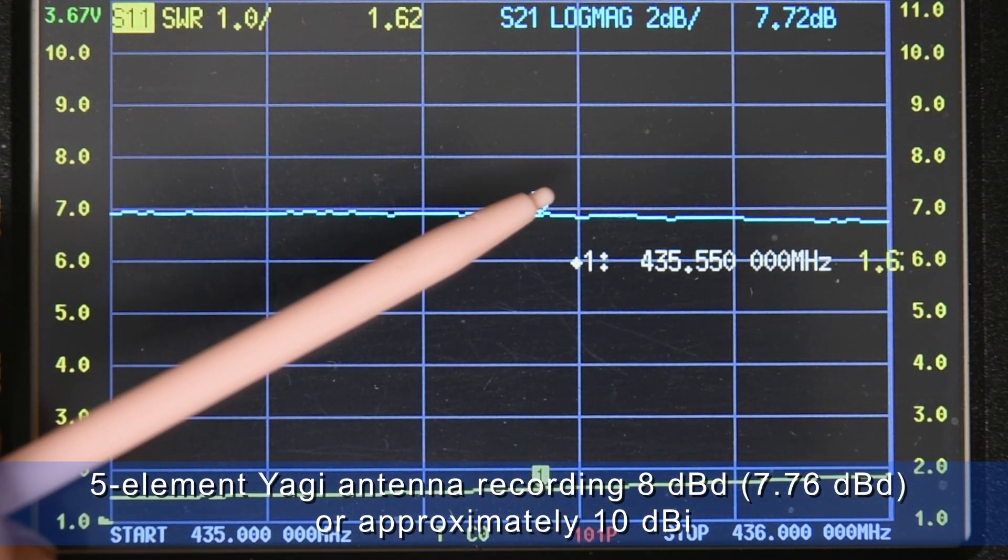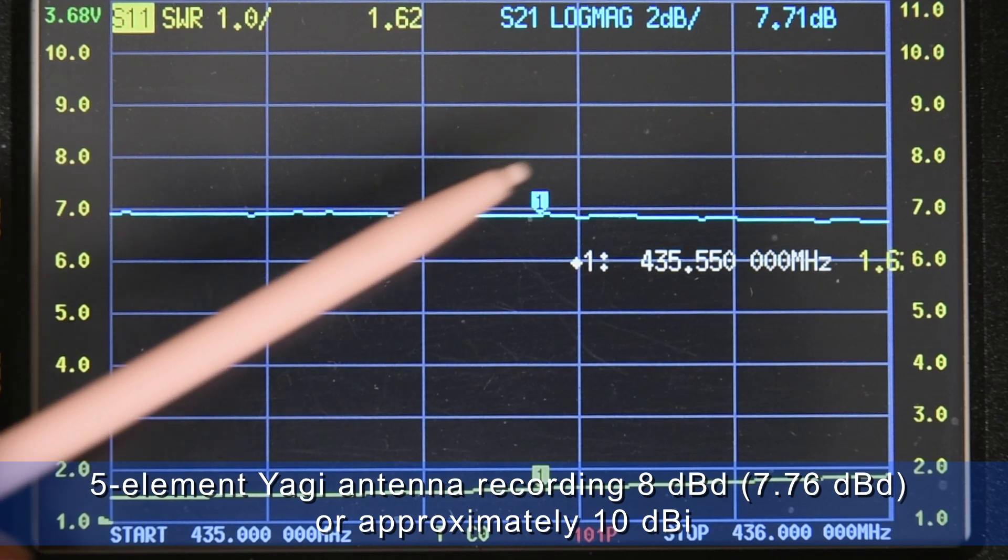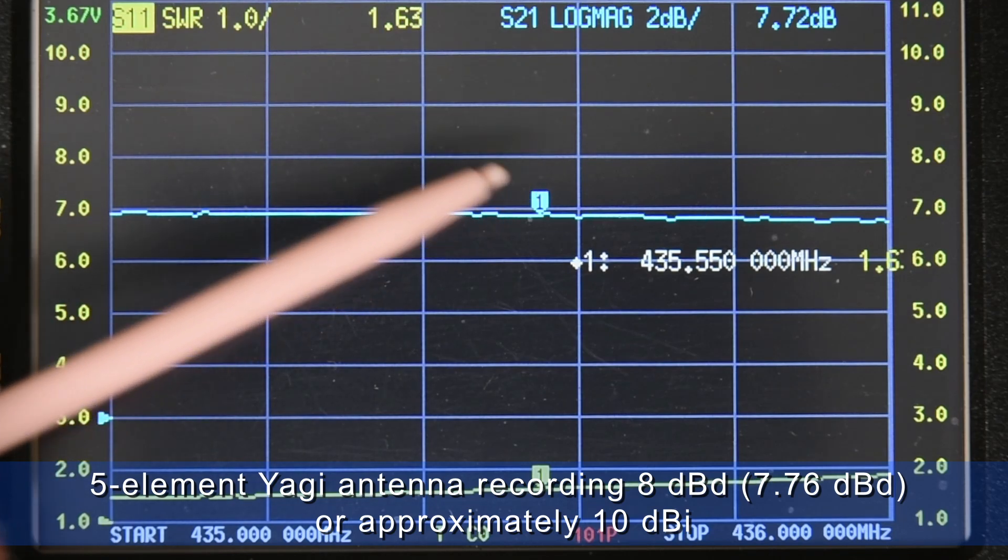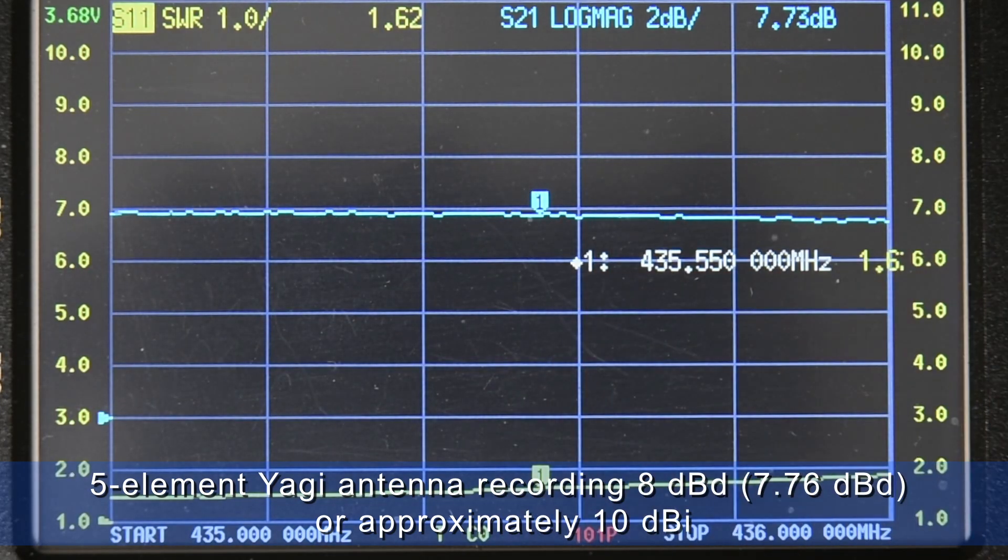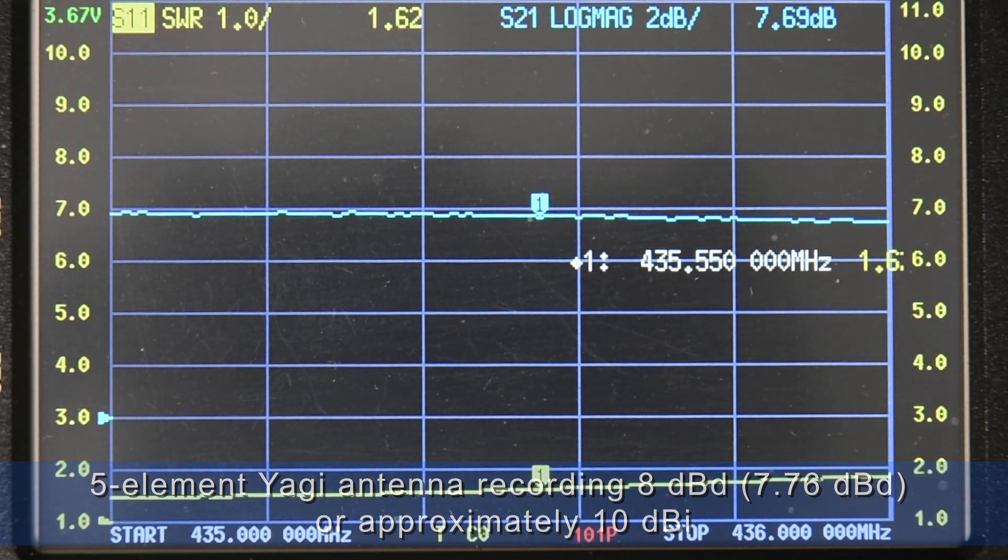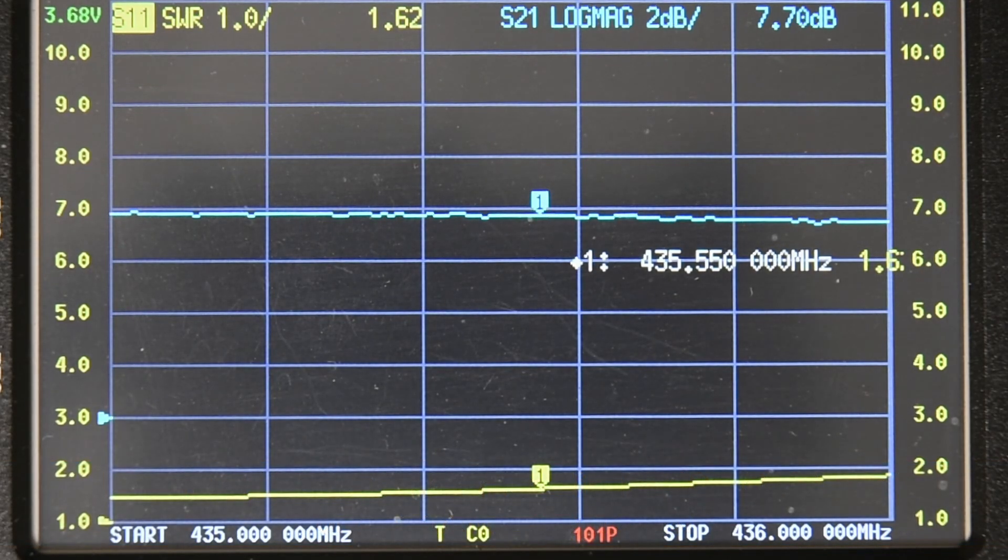And the return gain in blue indicating up here at seven point seven dB as compared to a dipole of the same frequency. So that wraps up the field tests for this antenna.